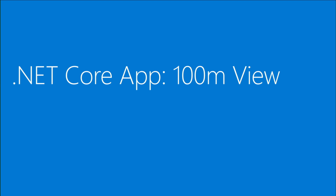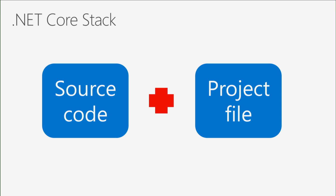Now we'll drop to the 100-meter view and get into some details before demos. Most development platforms have source code plus a project file, and .NET Core has this too. I'll show you what the source code and project files look like. Some of you probably know we have a project.json to csproj transition going on — we're going to see some of that as well.